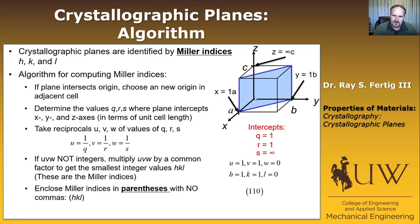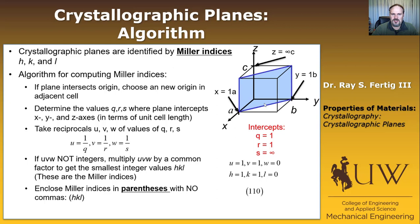I want to point out the connection to how we've defined planes originally. If you look at the 1, 1, 0 direction, it runs from the origin to that point and is perpendicular to this plane. In cubic systems, this is always a good check: plot the vector with the same indices and verify it's orthogonal to the plane. If it's not, you know you have a problem.